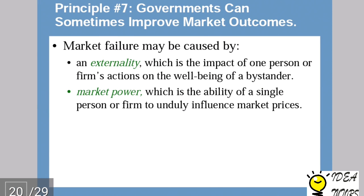Market failure may be caused by an externality, which is the impact of one person's or firm's actions on the well-being of a bystander. If a firm producing a good affects another firm unknowingly and the first firm does not take that into account, that is an externality. Externalities can be positive or negative. Market power — the ability of a single person or firm to unduly influence market prices — is another cause. These two things, externalities and market power, cause market failure.